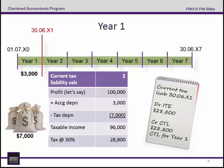To put that in a journal entry to recognize the current tax liability for the year ended 30 June X1, we debit our income tax expense and credit the current tax liability for $28,800.